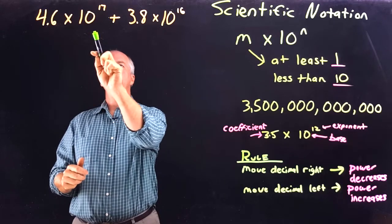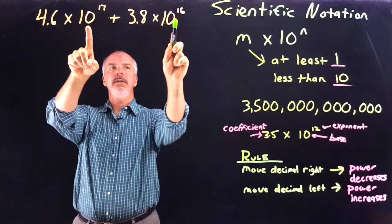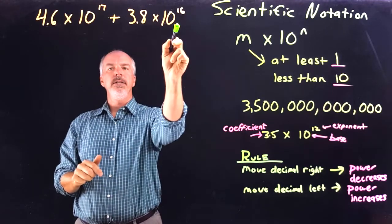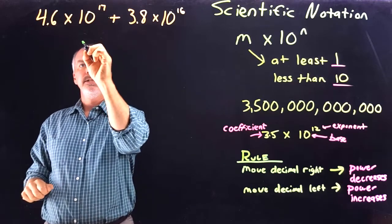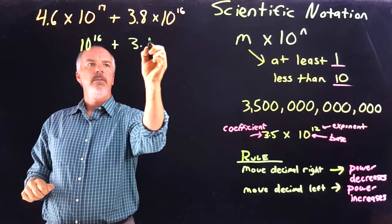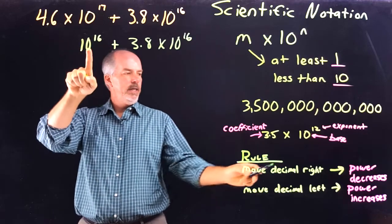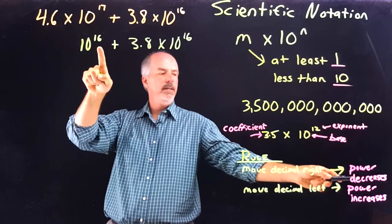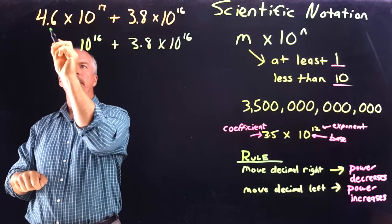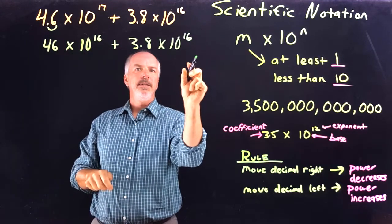Now let's look at some that are a little more difficult. We have 4.6 times 10 to the 17th plus 3.8 times 10 to the 16th. In this case the powers of 10 are different exponents, so we need to get them to the same power. We can either decrease the first or increase the second. First, we'll decrease 10 to the 17th down to 10 to the 16th. The rule: if the power decreases, we move the decimal to the right. Decreasing by one, 4.6 becomes 46, giving us 46 times 10 to the 16th plus 3.8 times 10 to the 16th.